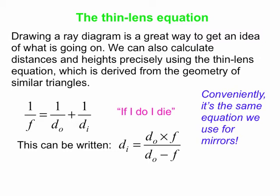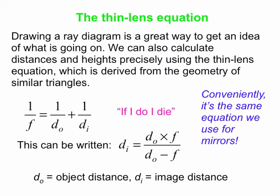As we did before with mirrors, we can write this equation as d_i = d_O × f / (d_O − f). That's often the way we use it, because we usually know the object distance and the focal length, and then we calculate d_i. However, you can get any one of the three things if you know two of the others. Note that in 1/f = 1/d_O + 1/d_i, d_O and d_i are equivalent, so d_O = d_i × f / (d_i − f) also works.